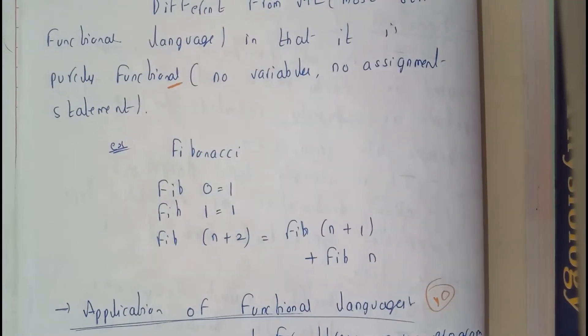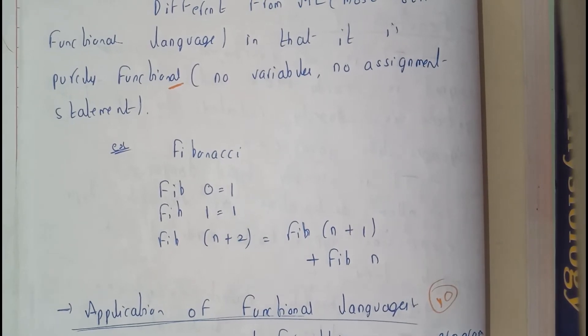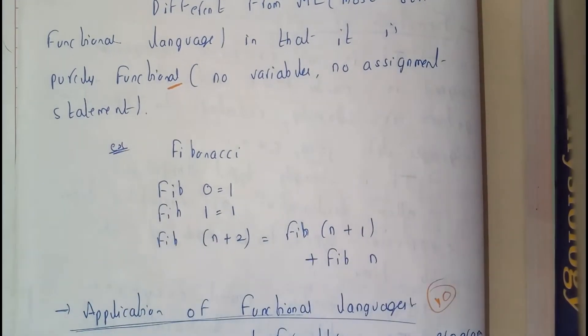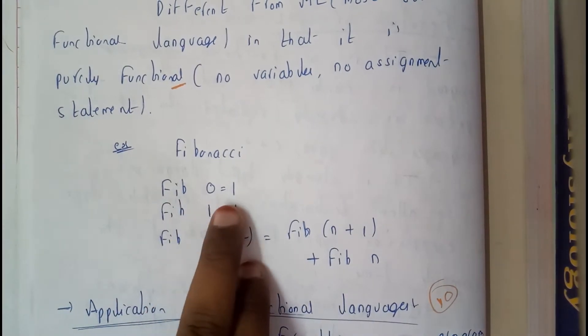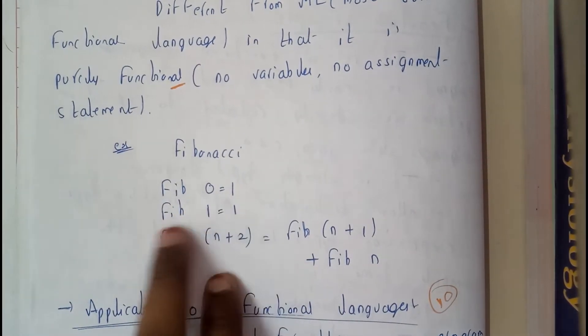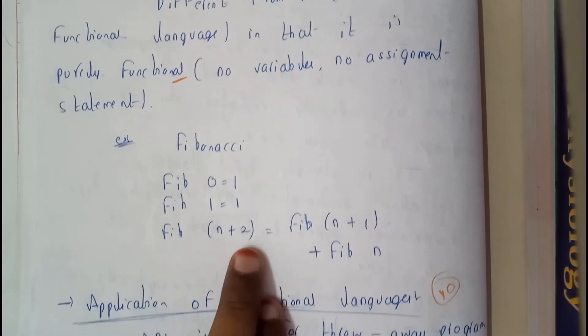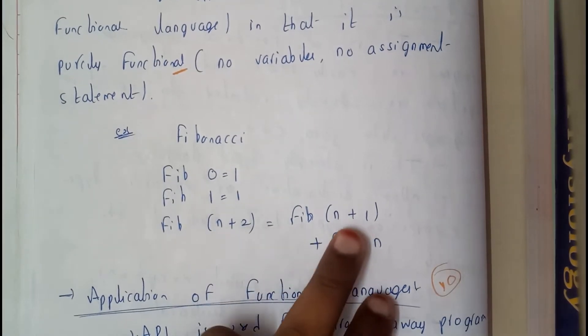...take an example of a small program. Let us assume Fib, that is nothing but Fibonacci. Fib 0 equals 1, Fib 1 equals 1, Fib (n+2) equals Fib (n+1) plus Fib n.